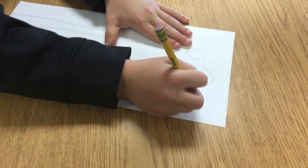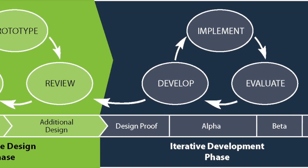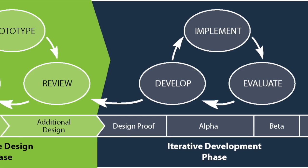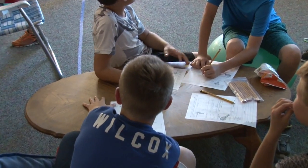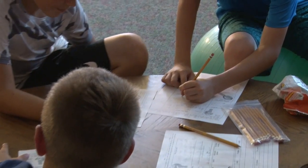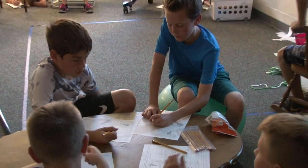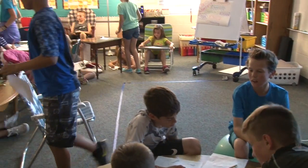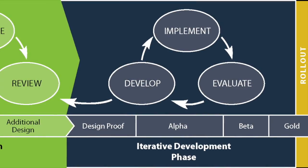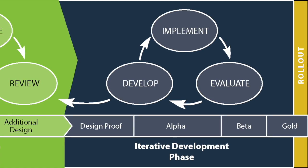Following the iterative design phase comes the iterative development phase. This is where the components from the early planning stages, the prototypes, and all of the other work come together to create a final project. Again, this cyclical process ensures that students are constantly designing, reviewing, testing, and editing — always looking to improve their final project throughout the design and development phases.